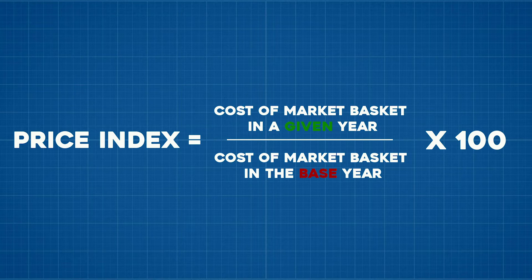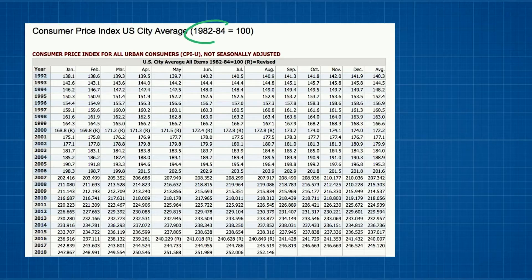The way we calculate the CPI is: the price index in a given year equals the cost of the market basket in that year divided by the cost of the market basket in the base year, times 100. The current base year against which American economists measure the CPI is 1982 to 1984. In the base year, the CPI always equals 100.